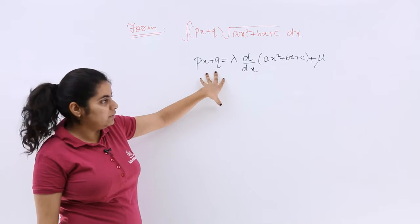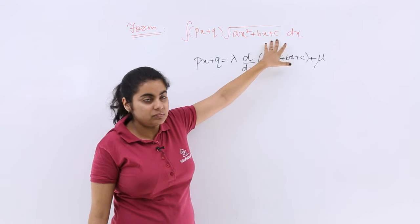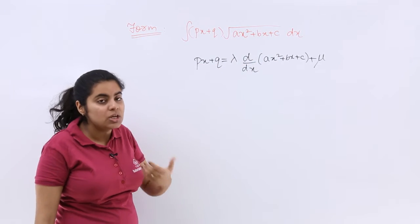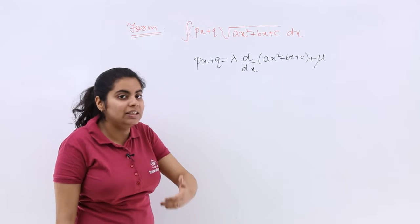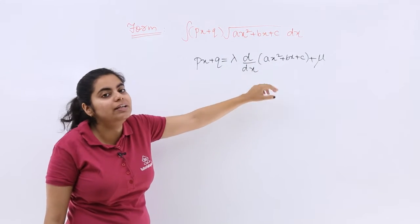That means here it is Px plus Q, and here it is a quadratic. Quadratic has a degree 2, linear has a degree 1. So in order to make the degree here also 1 for comparison, we are going for the derivative.